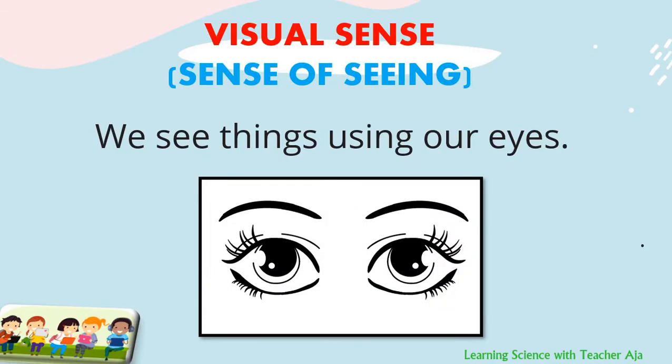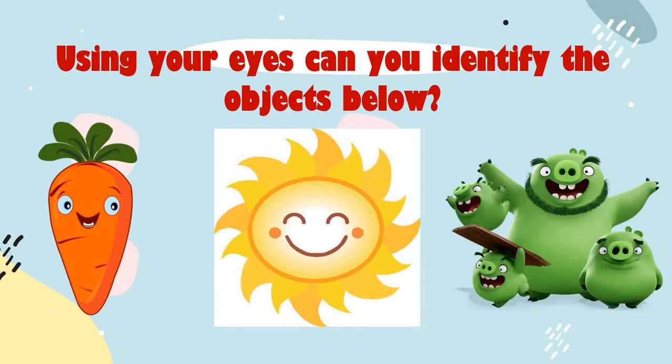The first sense is called the visual sense, or the sense of seeing. We see things using our eyes. Can you identify the objects below? The first one is correct — carrot. The second one is definitely the sun. And the third one are — yes, they are pigs.